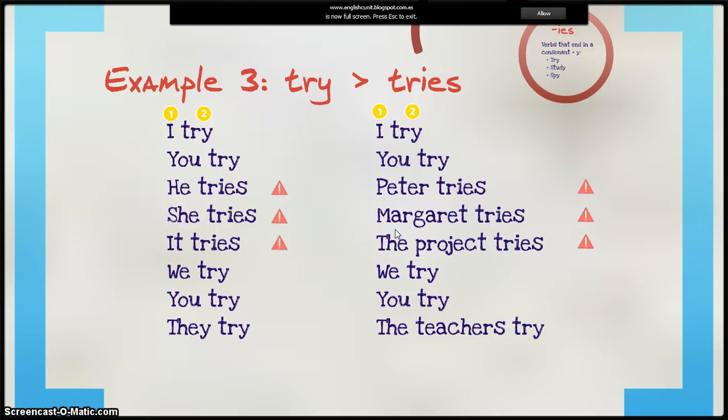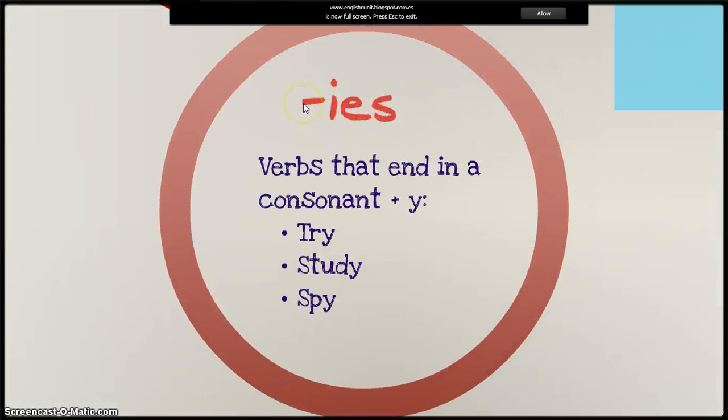Example number three. Some verbs end in a consonant and Y. For example, try, study, or spy. In this case, the Y disappears. We use an I, E, S.